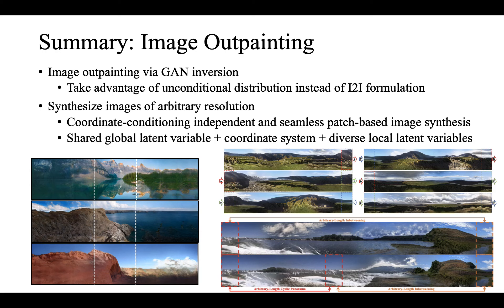In summary, in the In&Out work, we achieved image outpainting using GAN inversion techniques instead of a conventional image-to-image formulation. Then, in InfinityGAN, we achieved image synthesis of arbitrary resolution using a combination of shared global variables, diverse local latent variables, and a coordinate system. Thank you for listening.